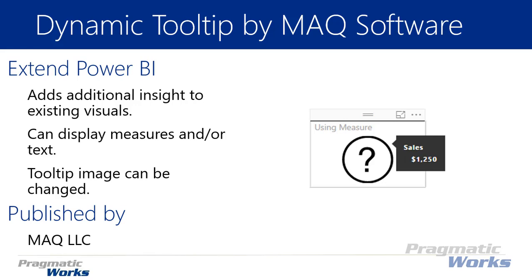You can display either measure values, like you see in the screenshot on the right-hand side, or you can have plain text if you wanted to describe something using the dynamic tooltip. The tooltip can change its image — the question mark can be replaced with any image that's on the web, as long as you provide a URL, so the dynamic tooltip is displayed with a different image. You have some options to choose from including different image types.